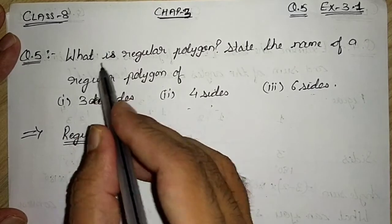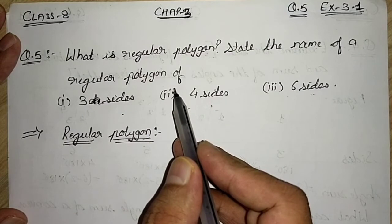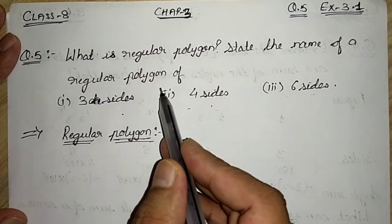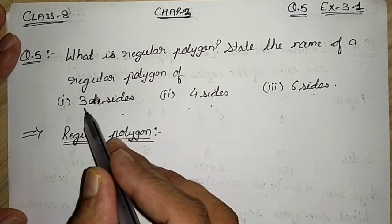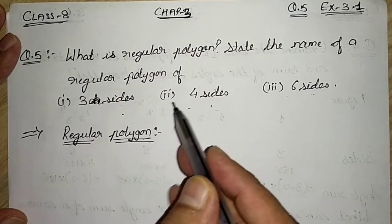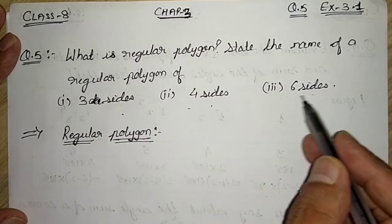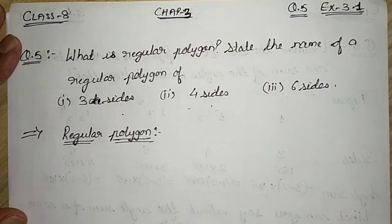First of all, we have to define what is a regular polygon, and then we have to state the names of regular polygons with three sides, four sides, and six sides. So let us start.